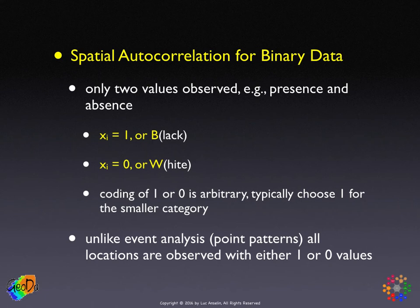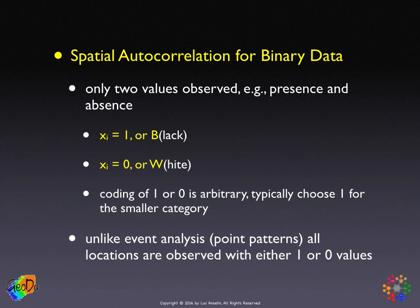In the literature, the ones are typically referred to as B for black, and the zeros are typically referred to as W for white. In practice, it's often a good idea to take one for the smaller category. The big difference between joint count statistics and event analysis like point pattern analysis is that here we have all the locations — both the presence and the absence of the phenomenon, so both zeros and ones. In point pattern analysis, we only have the ones, the locations of the events.